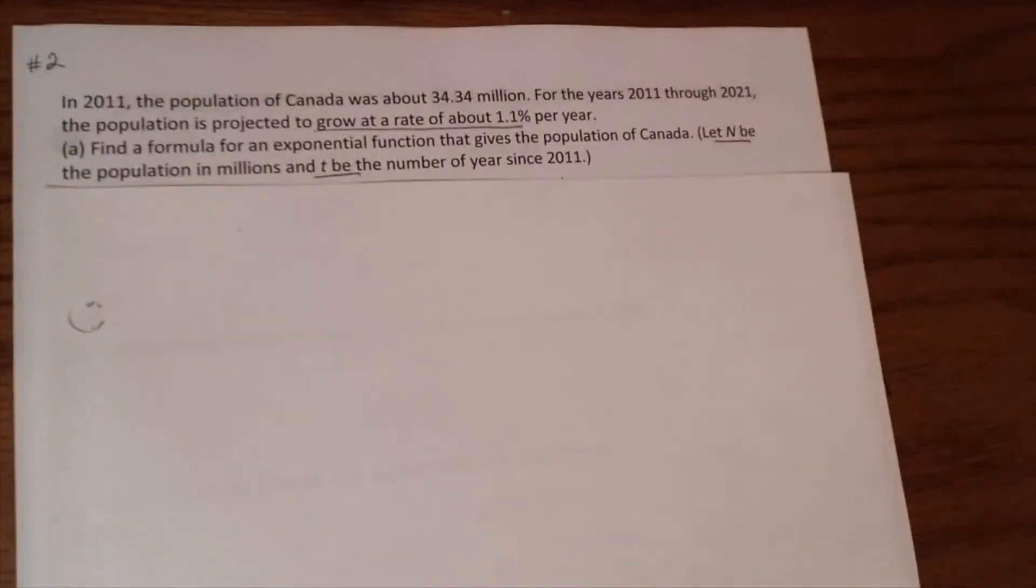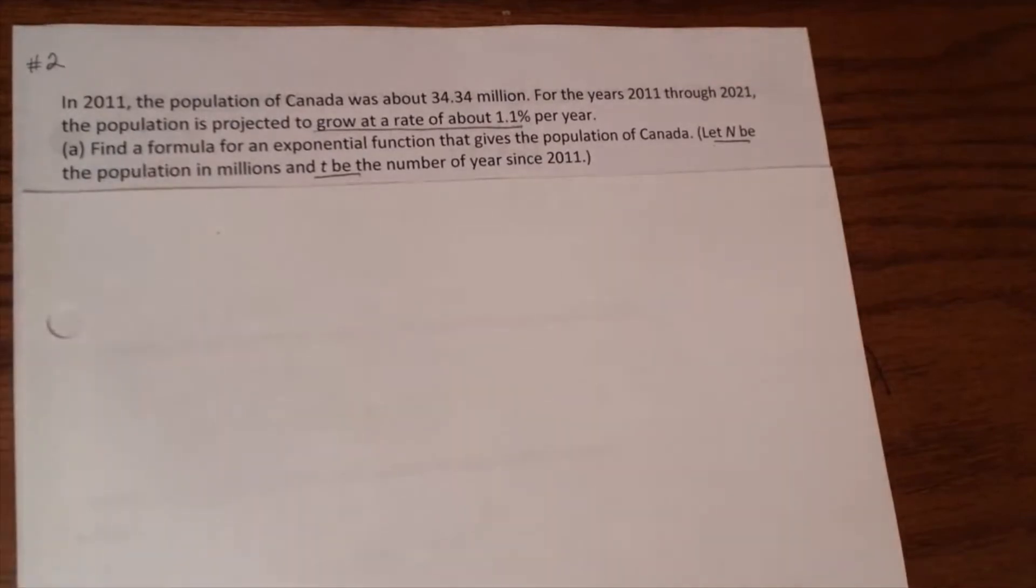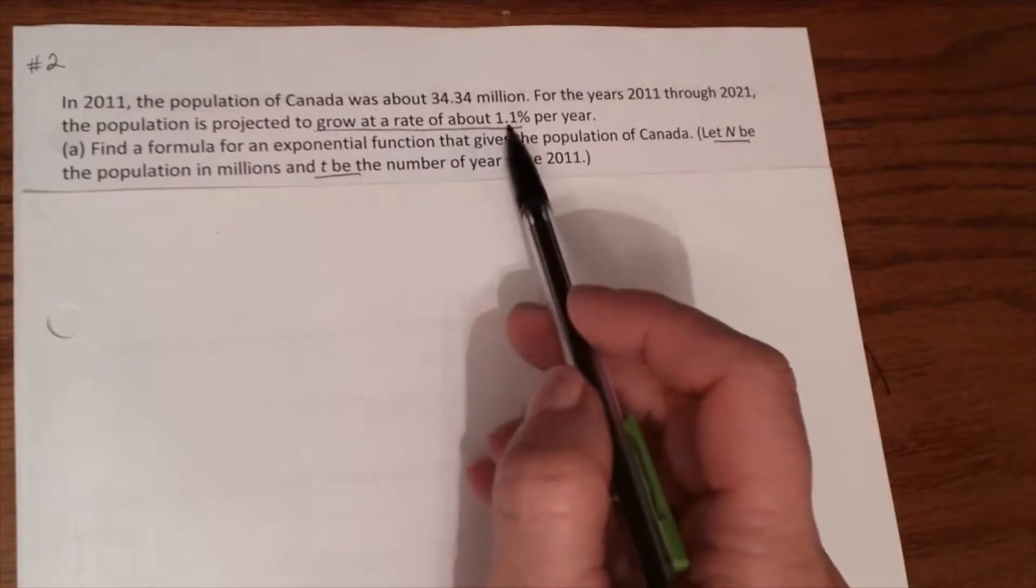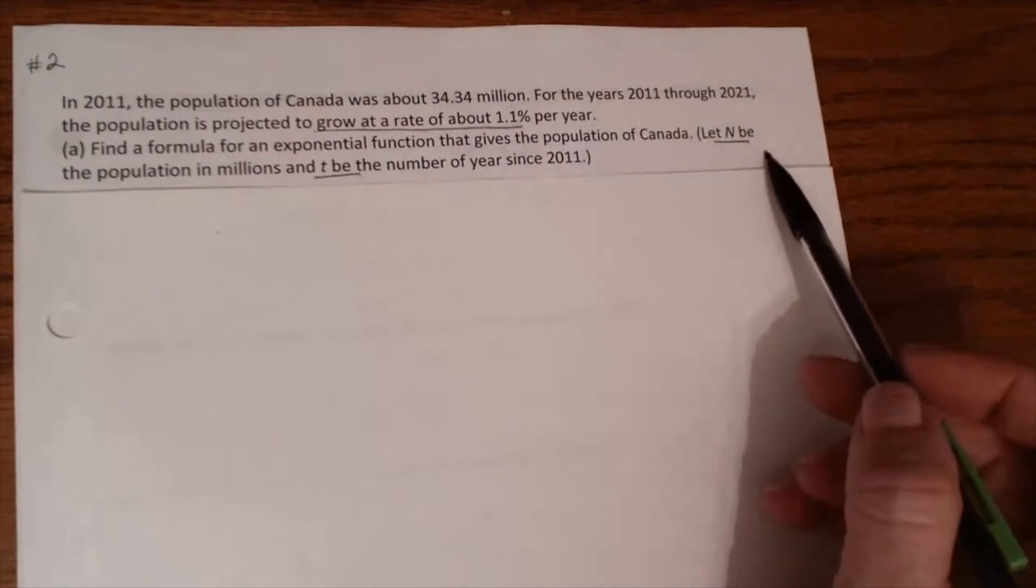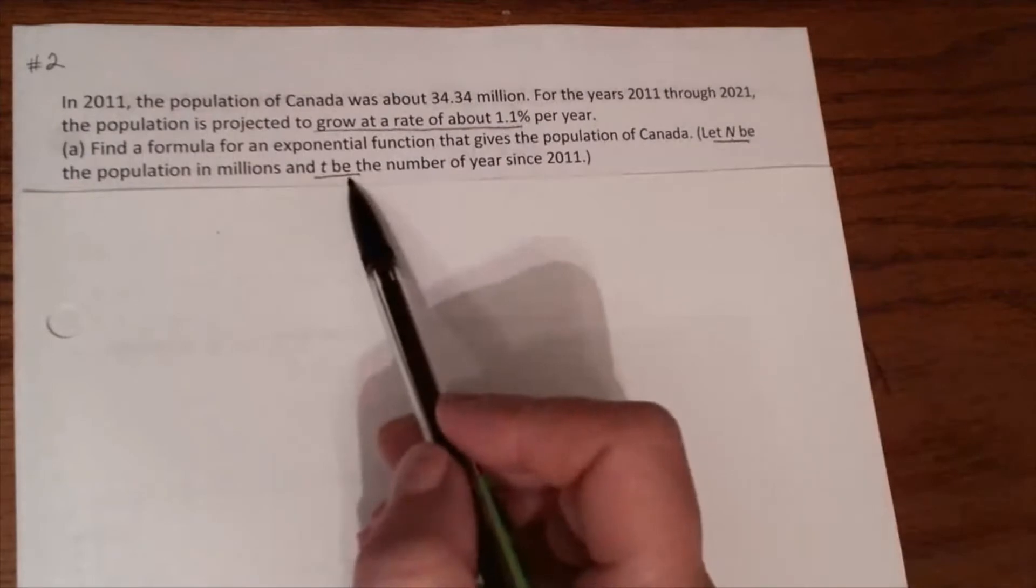Now we will review the second example. Please pause the video and read the problem. So we know that in 2011 the population of Canada was 34.34 million people, and the growth rate was 1.1% per year. We need to find the exponential function N of T, where T is the number of years since 2011.